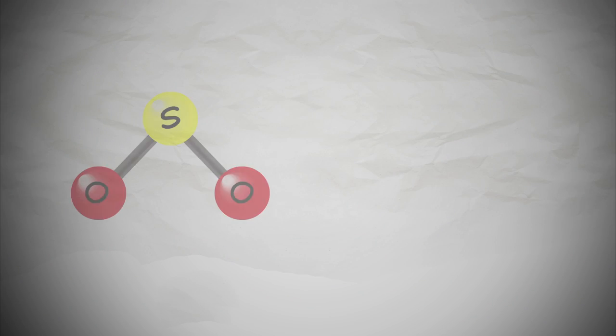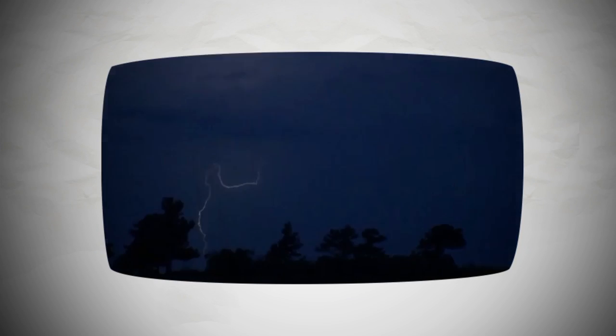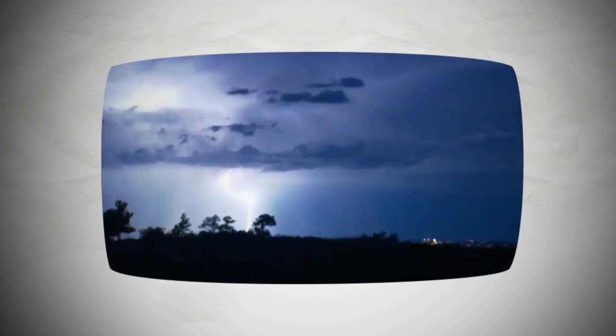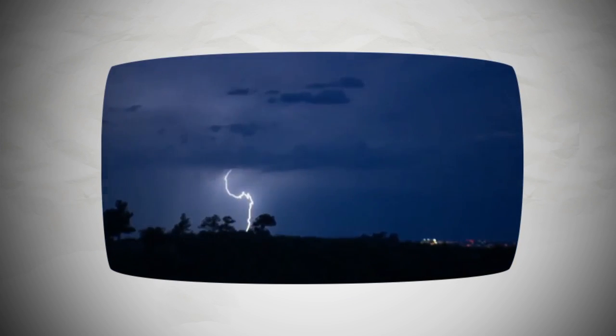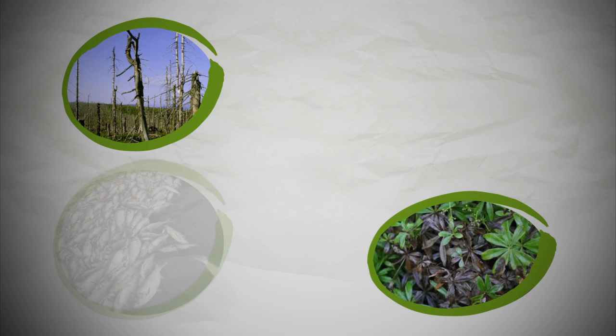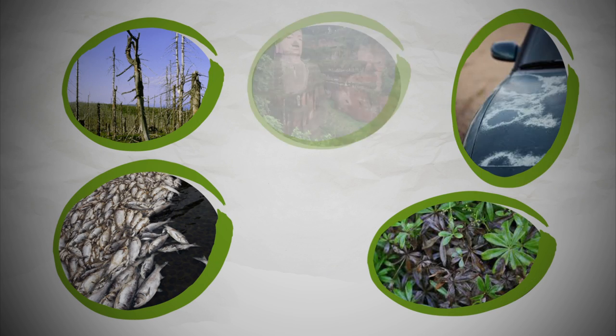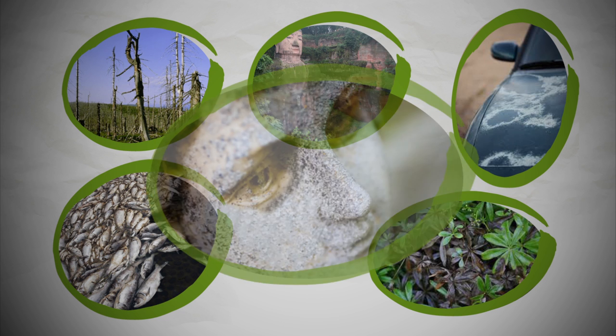When gases like sulfur dioxide and nitrogen oxide are emitted into the atmosphere, they react with water, oxygen, and other chemicals to form sulfuric and nitric acid. And when these acids precipitate, we get acid rain. Acid rain can kill trees, plants, and fish, as well as erode automobile paint, buildings, and stone.